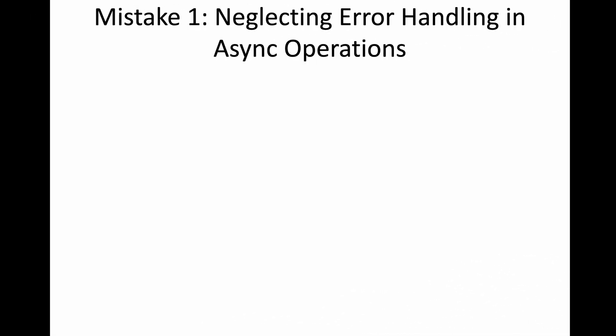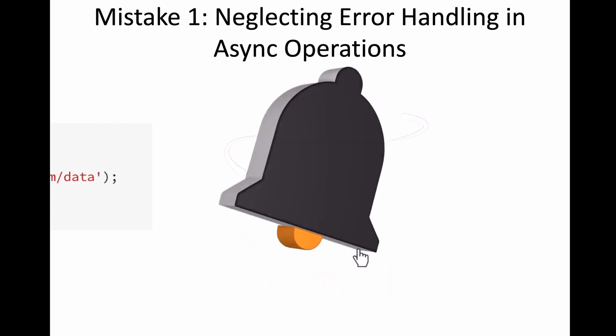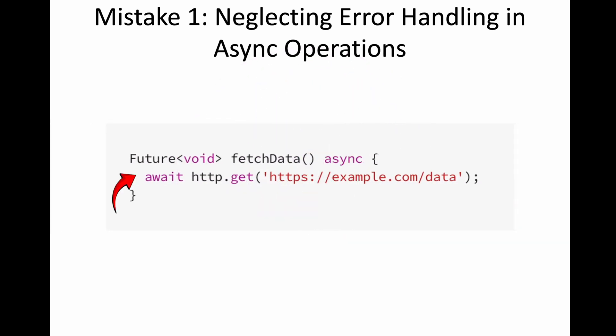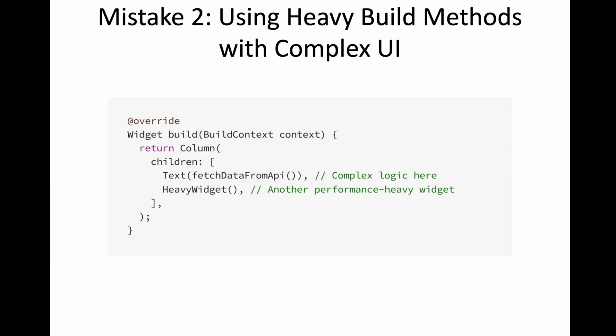One of the worst errors not handled by many Flutter developers is the async operation. As you can see, I have this API request which is an async operation, but we are calling it directly inside a method. The catch is you should call it within a try-catch block so that you can catch and handle the error — this way it prevents unnecessary crashes.